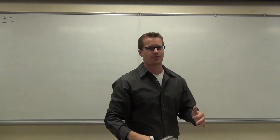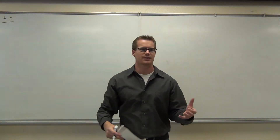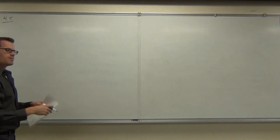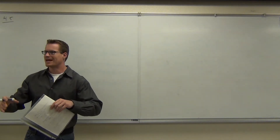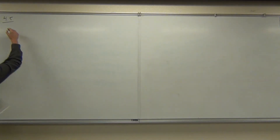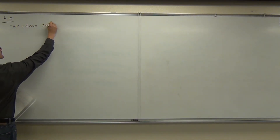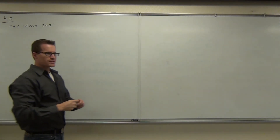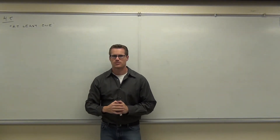What I need to get across to you in section 4.5 is that sometimes it's easier to deal with the complement of a set than it is the set itself. We're going to do a couple of examples to illustrate that, but first I need to give you the definition of what it means for the statement 'at least one.' So if I say 'at least one,' what does that mean to you?